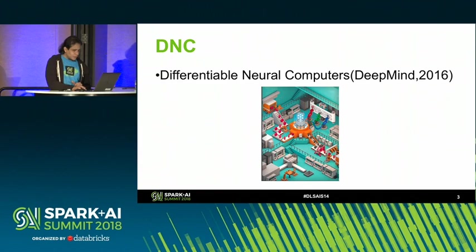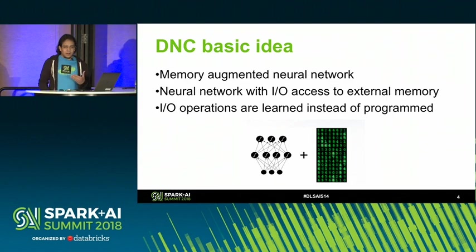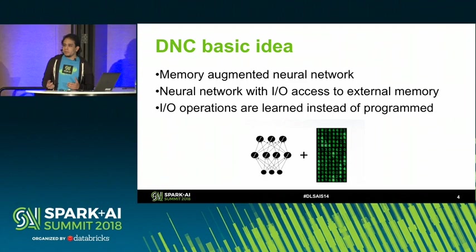So what's the basic idea? The basic idea is a neural network like the ones we know and love, but with an external memory. The neural network can access this external memory and can read and write to it. The IO operations are not programmed like we used to do in typical programming, but are learned by the neural network.